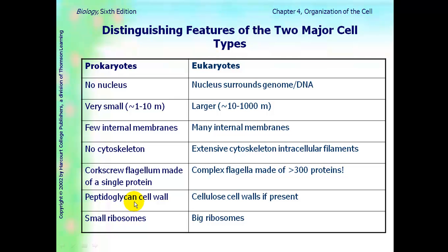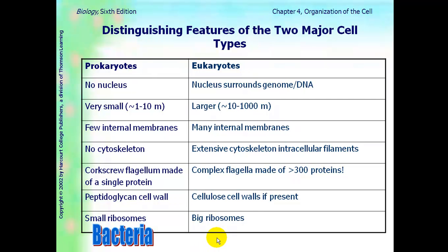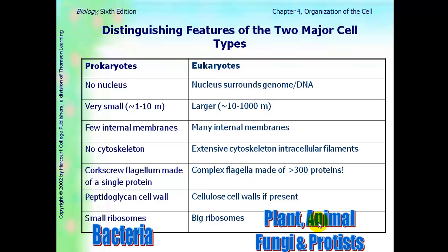We'll learn more about that later. In a eukaryote, the cell wall is made of cellulose, our polysaccharide. There are ribosomes in both, but they're larger in a eukaryote. An example of each: a prokaryote is a bacteria. When we're talking about eukaryotes, we're talking about plant cells, animal cells, fungi, and protists.